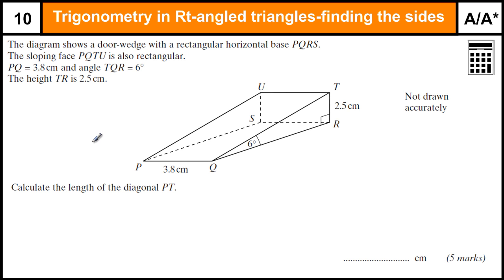Most trigonometry questions are grade B, but as soon as we go into three dimensions, it makes them a lot more tricky. It takes them up to the highest level of GCSE. This question is worth five marks. It'll usually be one of the last questions on an exam paper. We've got to find diagonal PT. That's that length there.